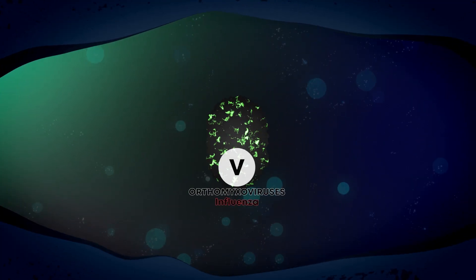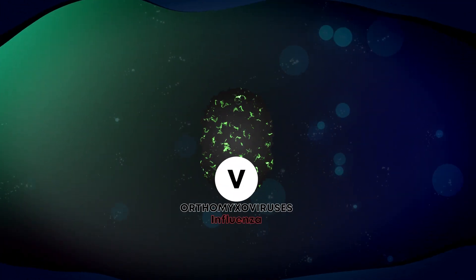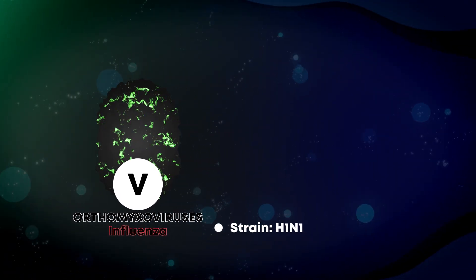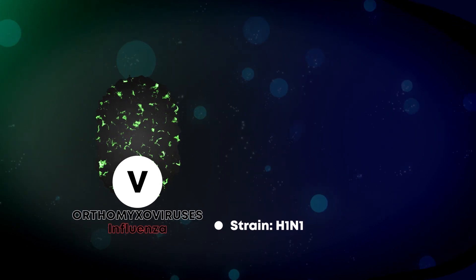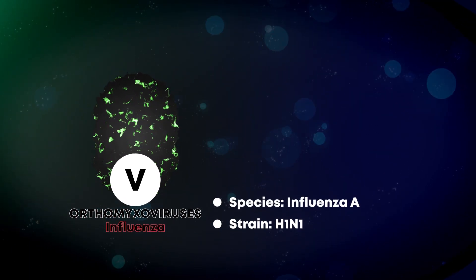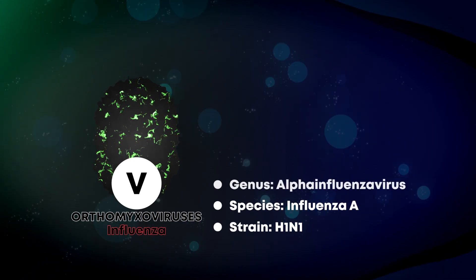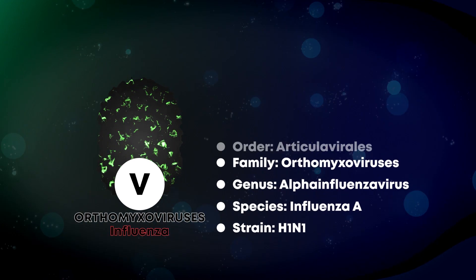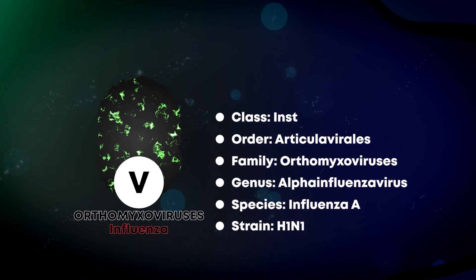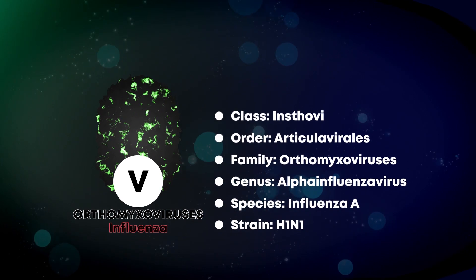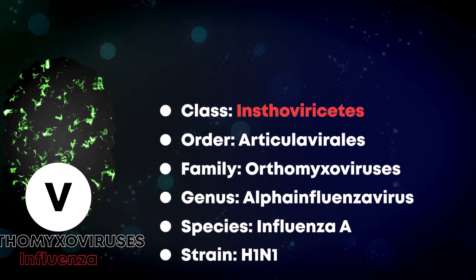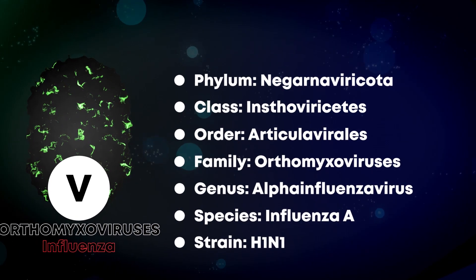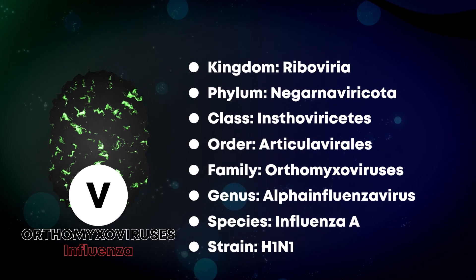For example, even 'flu virus' is too common a name — to talk about a certain type, you need to specify its strain. The H1N1 influenza strain is a subspecies of the influenza A virus, which is part of the genus of the same name, which is part of the orthomyxovirus family, which is part of the articulavirales order, and a class name so long it's hard to pronounce. As you can see, each step up increases the number of virus types by dozens, if not hundreds of times.